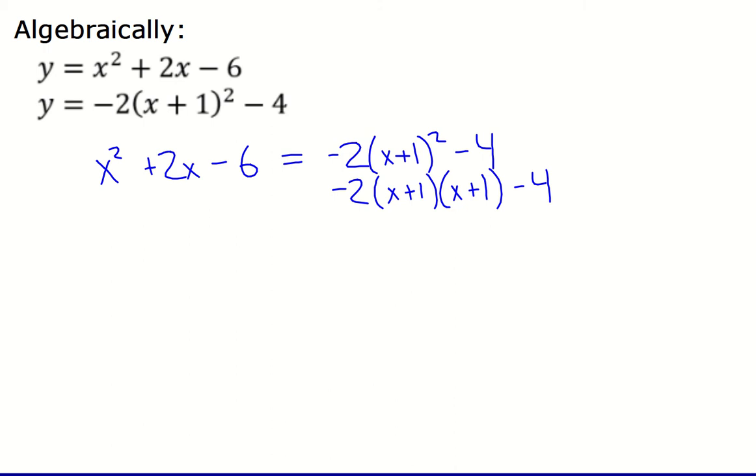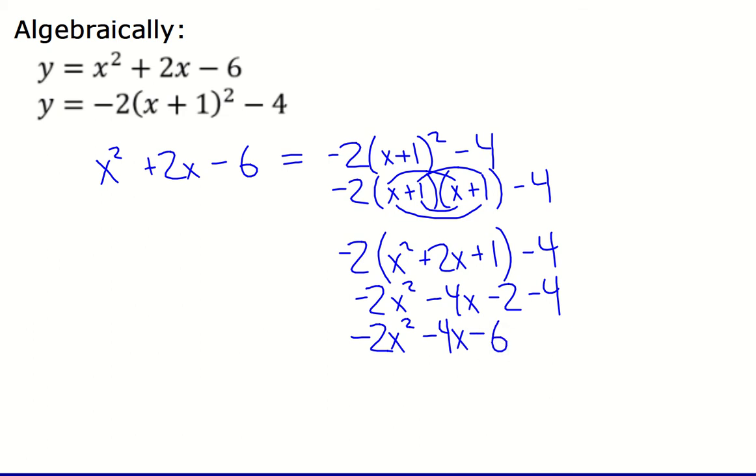So if we have the two factors written out side by side, I can FOIL and I can see that that's going to be x squared plus 1x plus 1x makes plus 2x, and then 1 times 1 is 1. So I get negative 2 times quantity x squared plus 2x plus 1 minus 4, and then I can distribute the negative 2 and combine the like terms of the negative 2 and the negative 4. So I get negative 2x squared minus 4x minus 6.